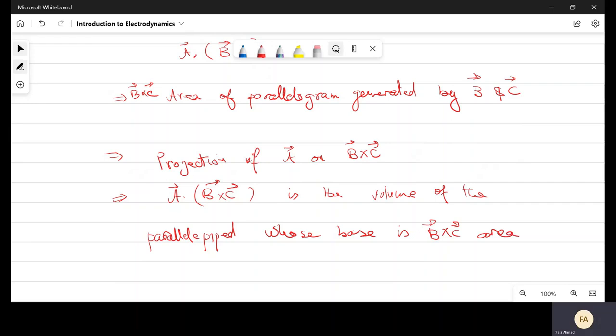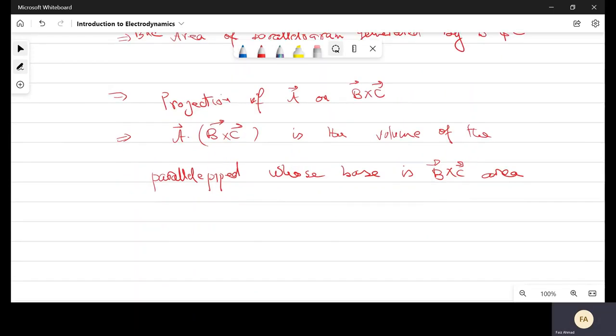We can define all three alternatives like A dot B cross C, and if we are talking about volume, so it is equal to B dot C cross A is equal to C dot A cross B.